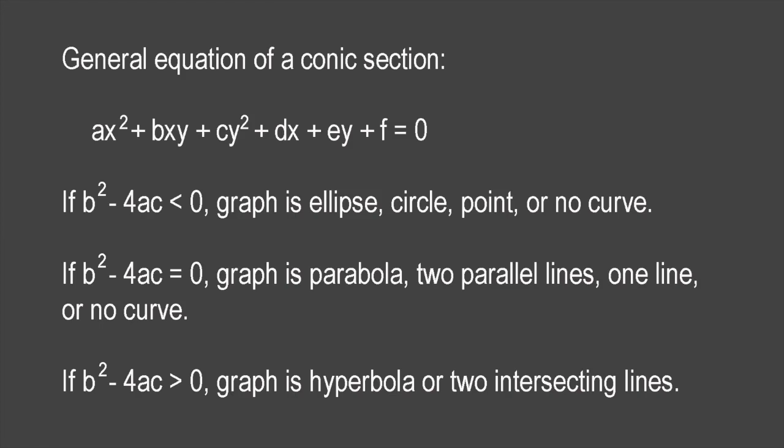The key quantity is the difference, b squared minus 4ac. If this is less than zero, the graph is an ellipse, a circle, a point, or no curve. If b squared minus 4ac equals zero, the graph is a parabola, two parallel lines, one line, or no curve. If it's greater than zero, the graph is a hyperbola, or two intersecting lines.